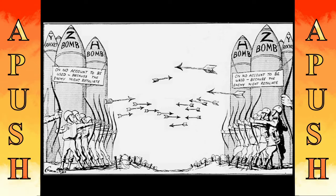During this time, Eisenhower is going to be very busy utilizing the CIA to the best of its effects, getting involved in the internal policies of Iran — seeing to their government being overthrown — and also in Guatemala. Eisenhower is taking a very active role on the international stage as we see these policies and plans being brought about here in the 1950s.